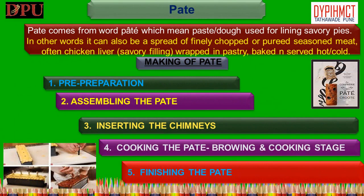Pâté. Pâté comes from the word 'pâte' which means paste or dough used for lining savory pies. It can also be a spread of finely chopped or pureed seasoned meat, often chicken liver, or a savory meat filling wrapped in pastry, baked and served hot or cold. Components of a pâté: 1. Pastry — an essential component; the dough base can be made from short crust, brioche, or pie dough. 2. Stock — made from leftover meat trimmings with aromatic vegetables, spices and herbs; used in force meats while mixing or in the preparation of aspic.